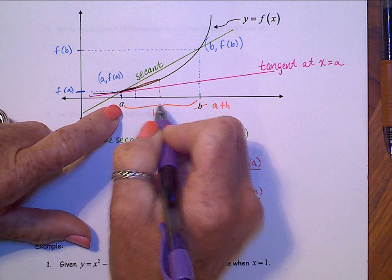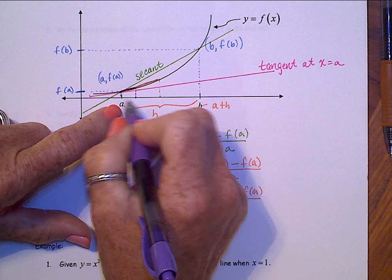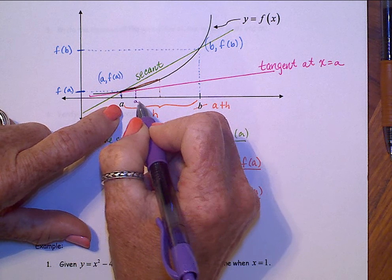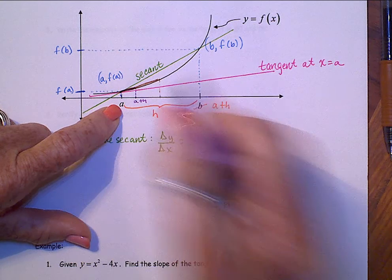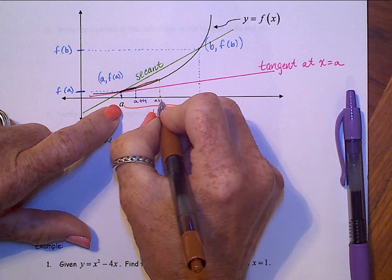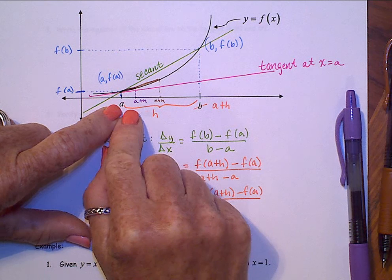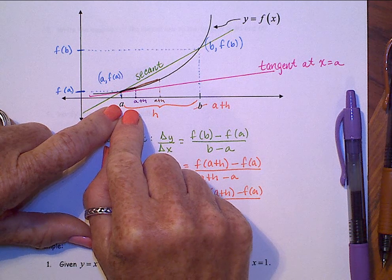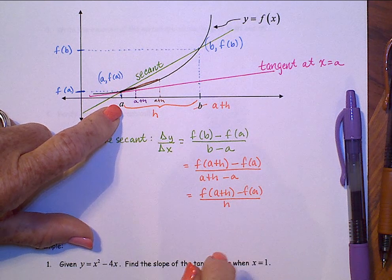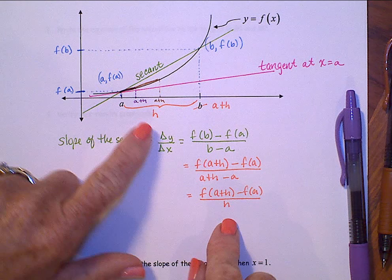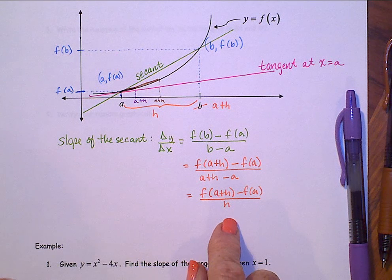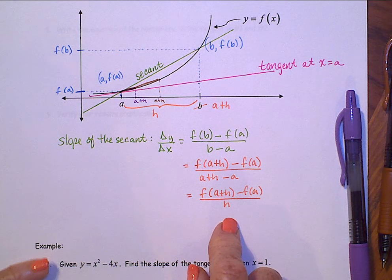Then, what if I moved that b closer to a still? And it's real tiny in here. But there's that secant. And you see it's pretty dark. The slope of that secant line now, very close to the slope of the tangent line. Well, how close can I let this point a go to? Or this point a plus h? Can we let h equal 0?